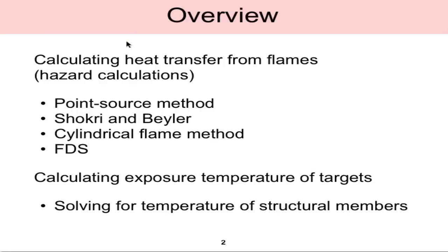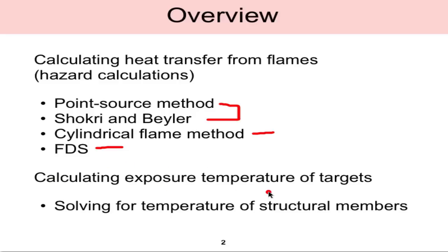First, I'd like to give an overview of this module where we're going to be calculating the heat transfer from flames. This is also referred to as hazard calculations where you can calculate the radiation coming off of a flame to a target such as a structural member or some important machine where we don't want it to exceed some critical temperature. We're going to look at a couple of hand calculation methods: the point source method, which is an analytical method, and the Chakry and Beiler empirical method. We're also going to look at briefly the cylindrical flame method, and also how FDS calculates incident heat fluxes to targets. After that, we're going to calculate the exposure temperature of targets and do an example where we solve for the temperature of a structural member.